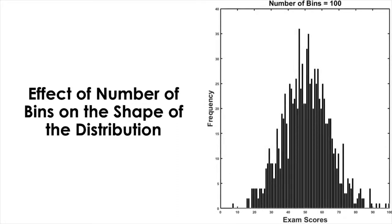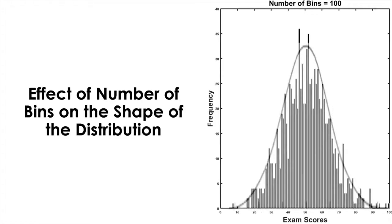We do this because we can and the data set is large. Now if we increase the number of bins, naturally the width of a bin decreases. As the width of a bin decreases, the histogram looks smoother. And if we keep dividing the range finer and finer, then it'll look smoother and smoother to the point where the outline of the histogram forms a smooth continuous curve when the bin size approaches to zero. And then the curve is called a probability density curve.